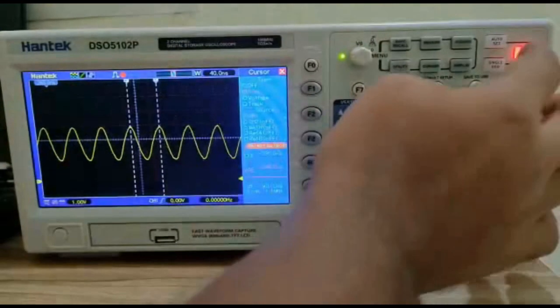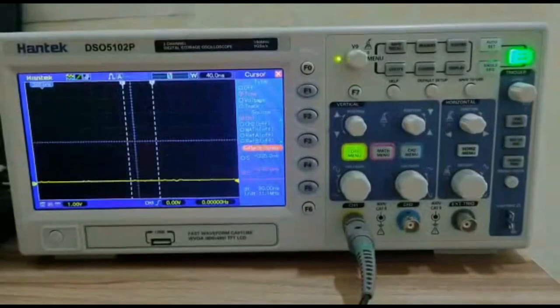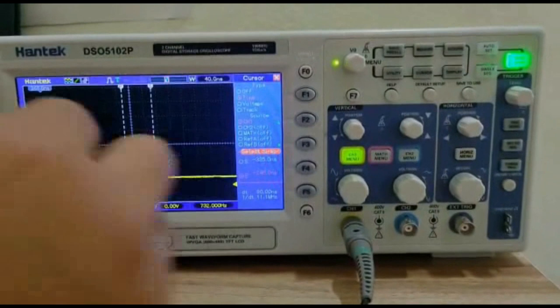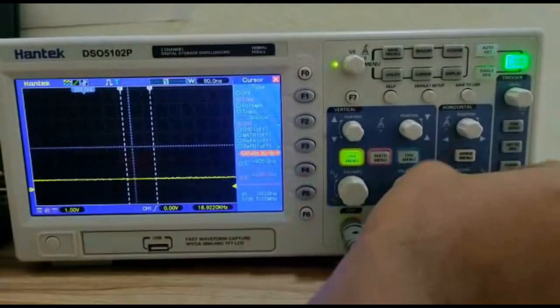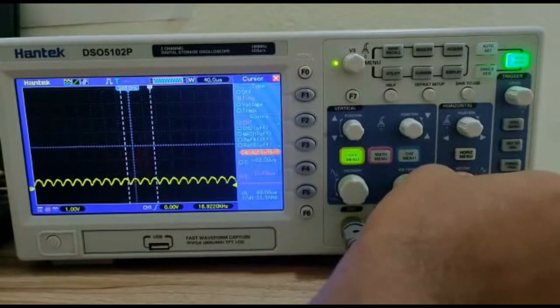Now, let us check the second oscillator that is 32.768. Now, we are not getting any waveform. So, small oscillations are there. I will reduce the time period. We are getting it now.